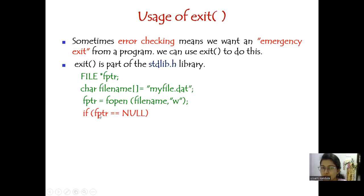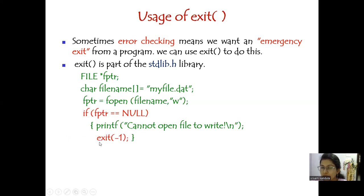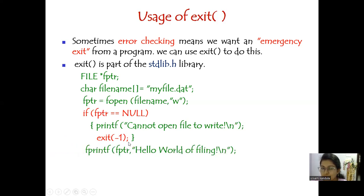Here we are saying: if fptr is equal to NULL, then we print 'cannot open file to write'. Then we use exit(-1) — with the help of this, the program will exit out of the file. Then we use fprintf — I'll talk about fprintf later — and then fclose(fptr).